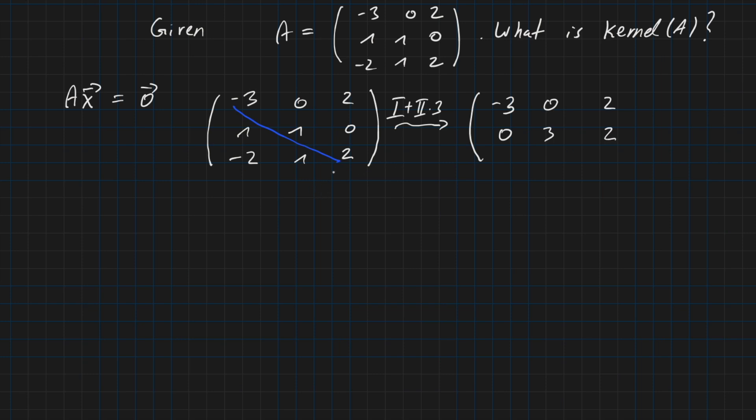And now we need to have a zero here as well. How can we do it? We can take the first row, multiply by two. So we have minus six then, and subtract the third row. We have also minus six here, so in total we have then zero here. Then we have zero times two, this is still zero, and then minus one times three, this is minus three.